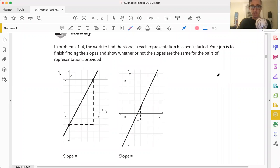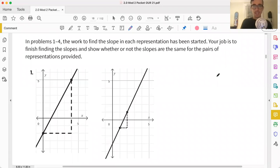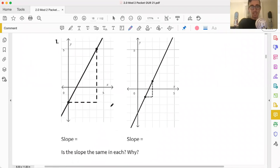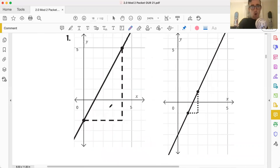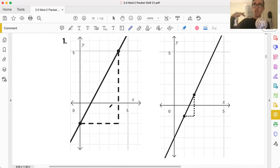In problems one through four, we're looking to find the slope in each representation. It's already been sketched out for some of these. Our job is to finish finding the slopes and show whether or not the slopes are the same for the pairs of representations provided. So since we're dealing with the graph, this is a straight callback of what we saw in Unit 1 using Rise, using Run. So let's sketch it out.